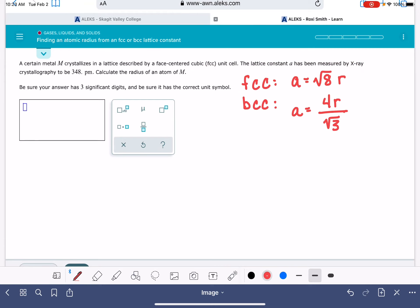And then we just need to plug in the value of A. So the value of A for this problem is 348 picometers, and that is equal to the square root of 8 times the radius r. I'm going to divide both sides by the square root of 8, and that gives me a radius of 348 divided by the square root of 8.